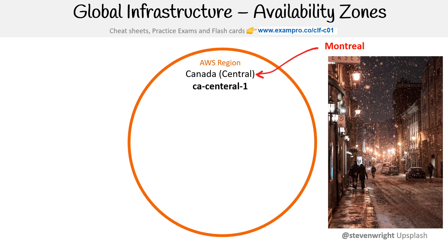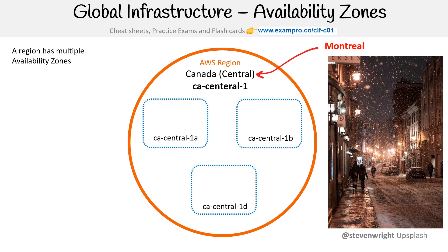The idea here is that a region has multiple availability zones. Here you can see that we have one A, one B, and one D. For some reason, AWS decided to not launch one C — maybe it's haunted, who knows.